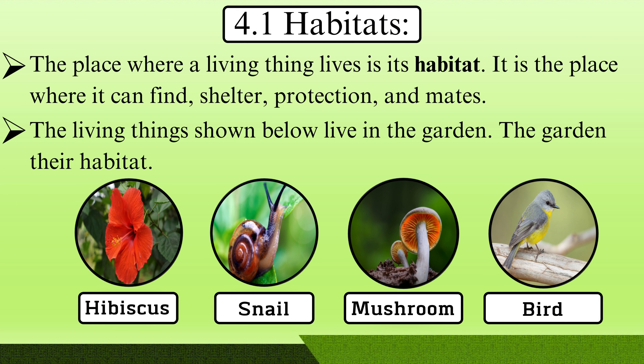Habitats. The place where living things live is its habitat. It is a place where it can find shelter, protection and mates. The living things shown below live in the garden. The garden is their habitat.